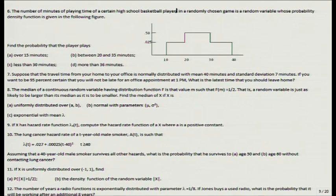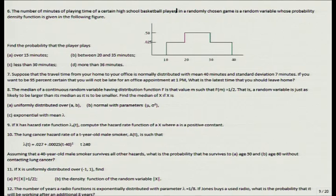The lung cancer hazard rate of a t-year-old male smoker is given. If you know the hazard rate function, you can compute the CDF of the random variable. Assuming a 40-year-old male smoker survives all other hazards, what is the probability he survives to age 50 or age 60 without contracting lung cancer? I have discussed part of this problem in the lecture.